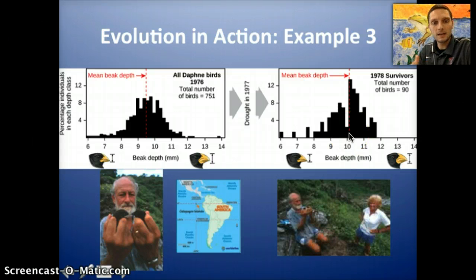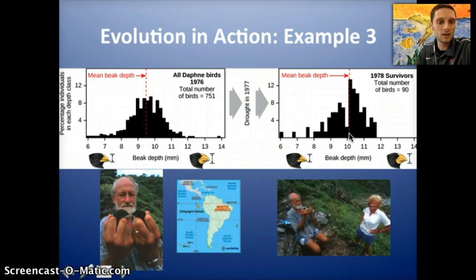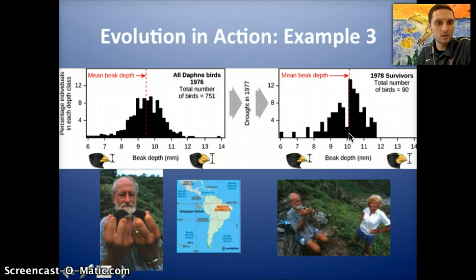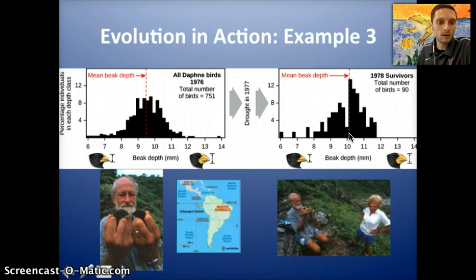Now, that may not seem like a major change, but this is natural selection causing this population to change, and this is representing biological evolution because the allele frequencies — in this case beak size — have changed. It's another example of natural selection. There are many more that we have observed in nature through collection of data and evidence, and we'll look at some more in class. That is our discussion of natural selection.